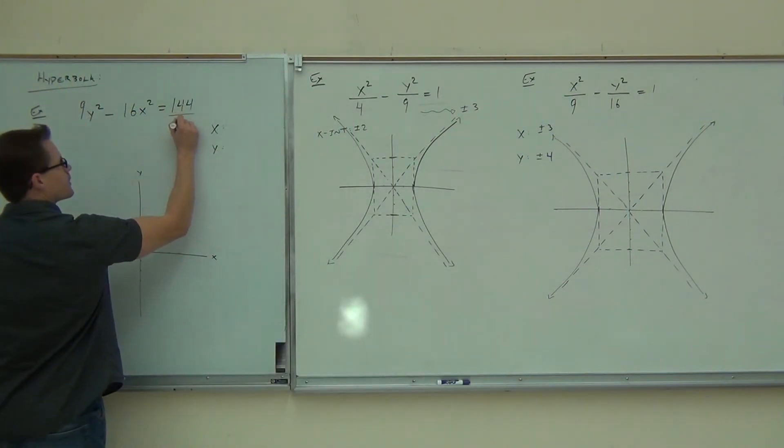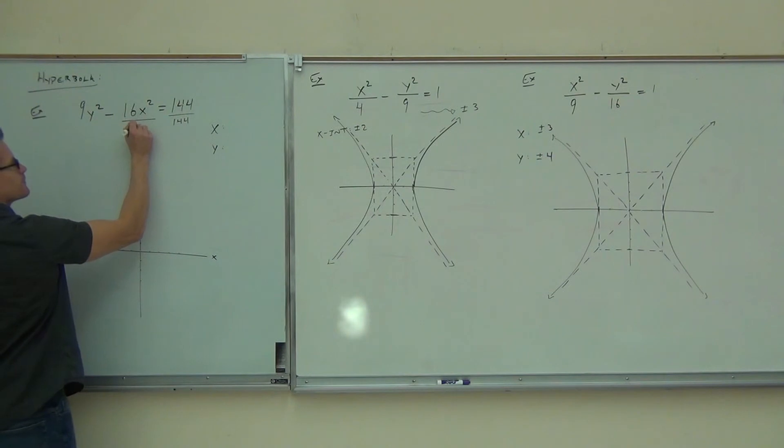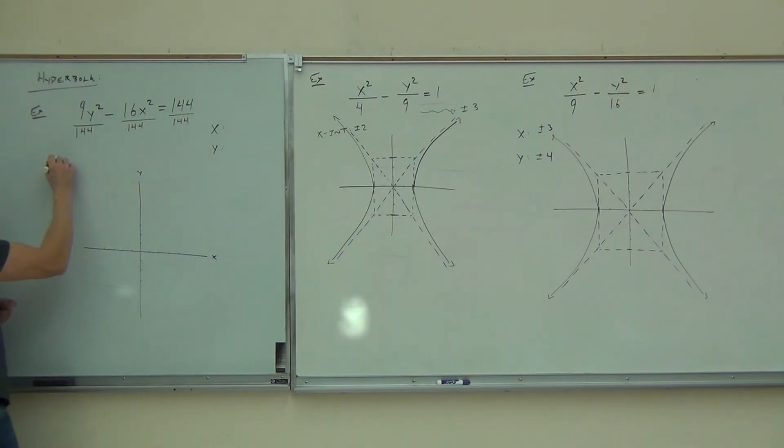Let's do that. So, if I divide everything by 144, we're going to get y squared over 16. Very good. Minus x squared over 9 equals 1.